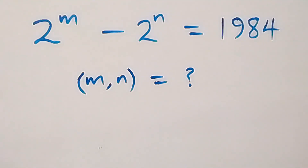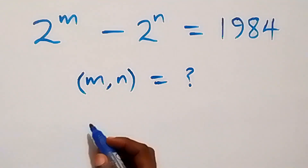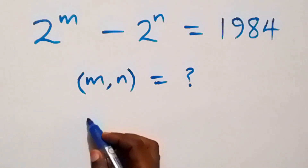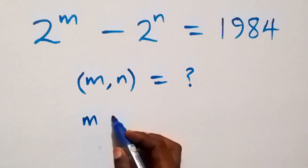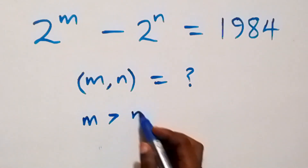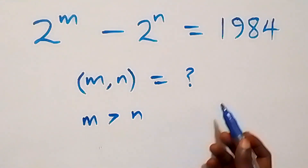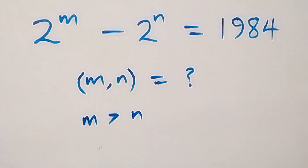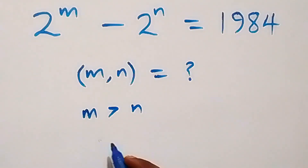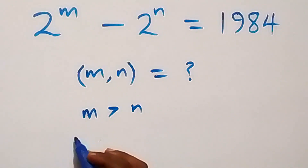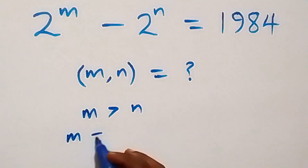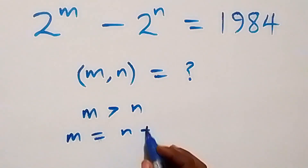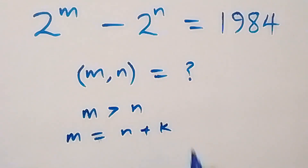Hello, you are welcome. We need to solve for m and n in this algebra equation. It is important to know that m will be greater than n for this to be true. Since m is greater than n, we can write m equals n plus some number — let it be k.